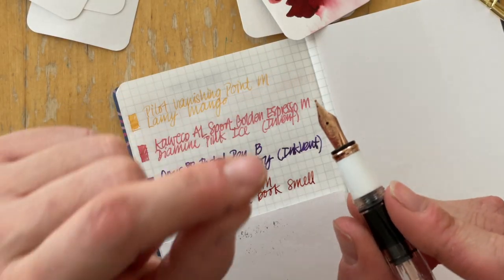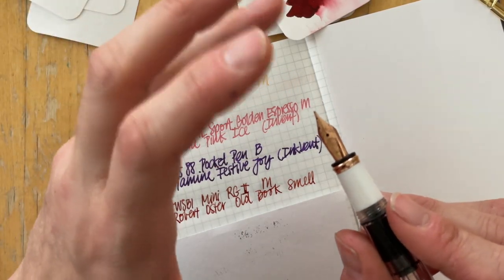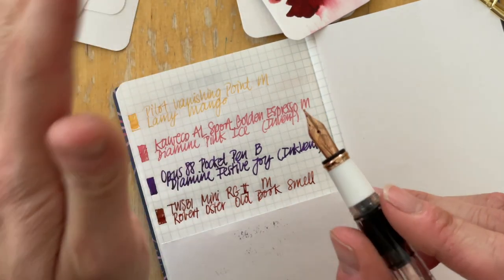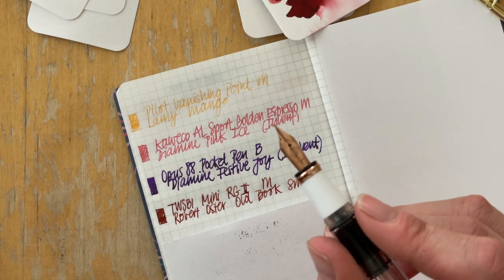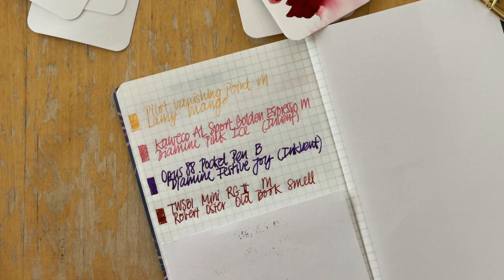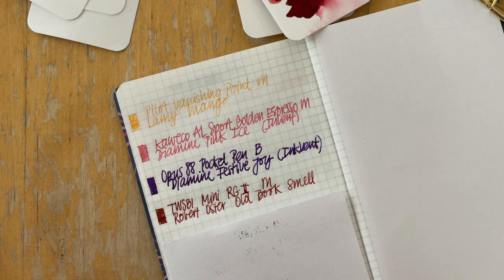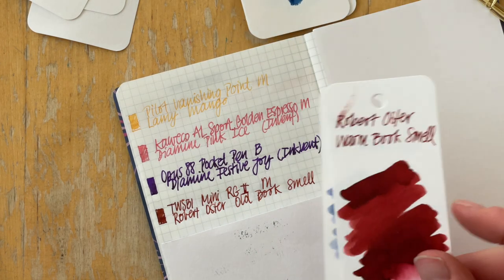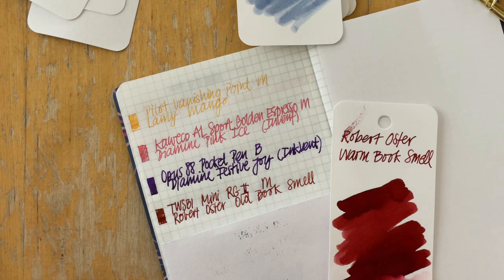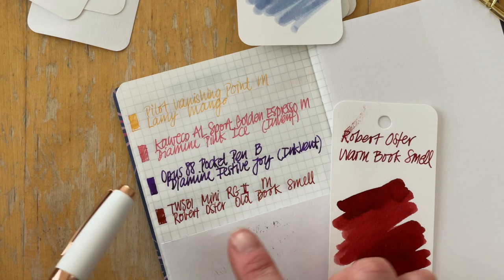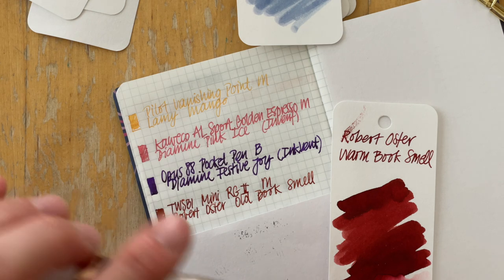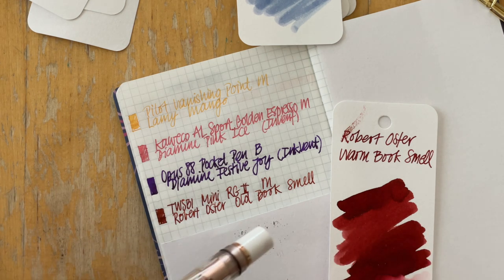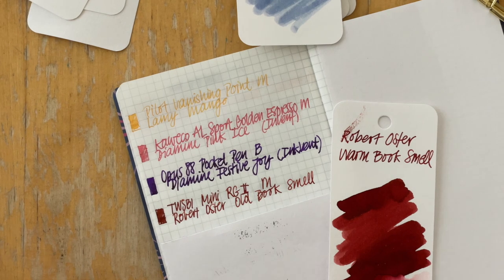The previous owner said that this nib was scratchy and they didn't like how it wrote. I agree. Again, when I took out the micro mesh for the Kaweco, I did the same thing with this one and it helped tremendously. I really like this ink. It looks a lot darker. Maybe it has settled a bit in this pen or the reason why it looks so different is because this is Tomoe River paper and this is not. Yes, I really enjoy this. I love writing with it. So perfect.